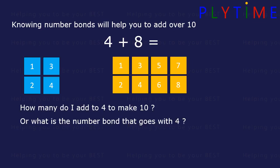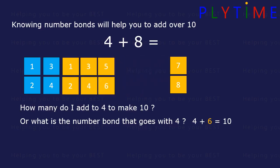What number bond goes with 4? 4 and 6 is 10. If we move 6 over to the 4, we've made a block of 10 and we've still got 2 more to add.